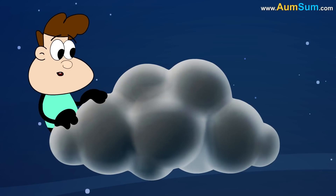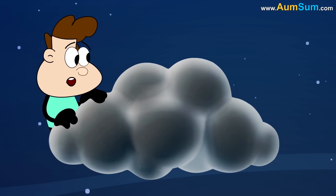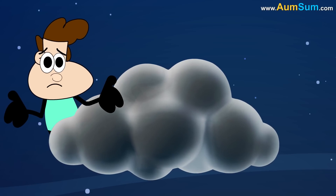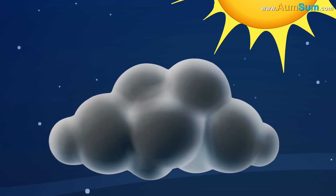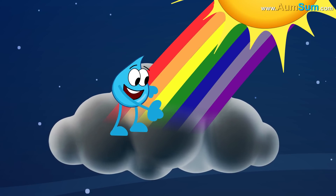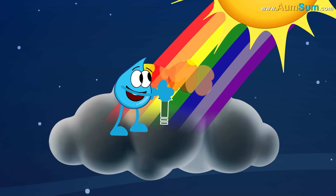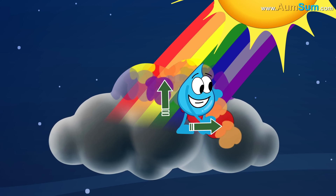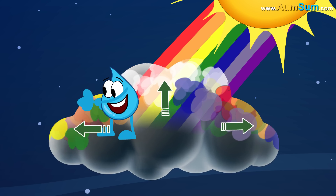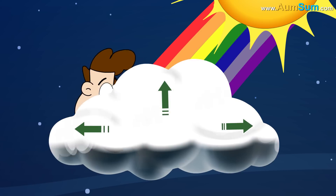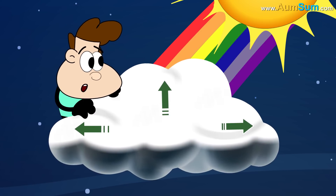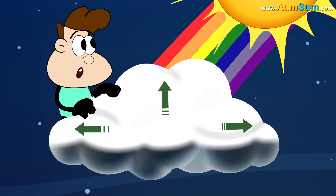Then why do clouds sometimes appear gray? This is because the scattered light in the cloud is usually sent upwards or to the sides, making them appear more white as compared to the lower portion, which receives less light.